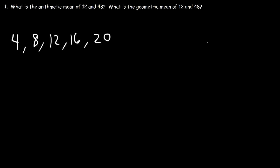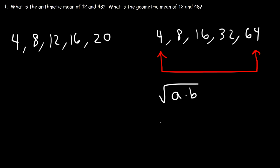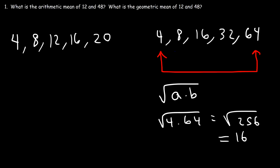Now what about a geometric mean? Let's write out a geometric sequence starting with 4, multiplying by 2 each time: 4, 8, 16, 32, 64. To calculate the geometric mean of 4 and 64, we should get the middle number, 16. The formula is the square root of a times b, so it's the square root of 4 times 64. That's the square root of 256, which is 16.